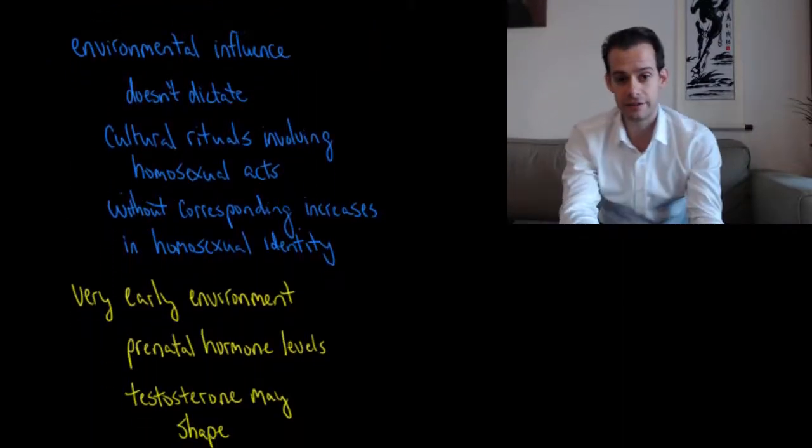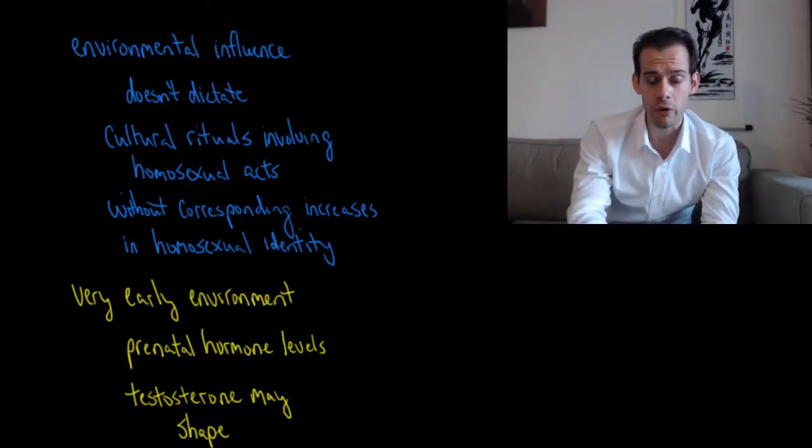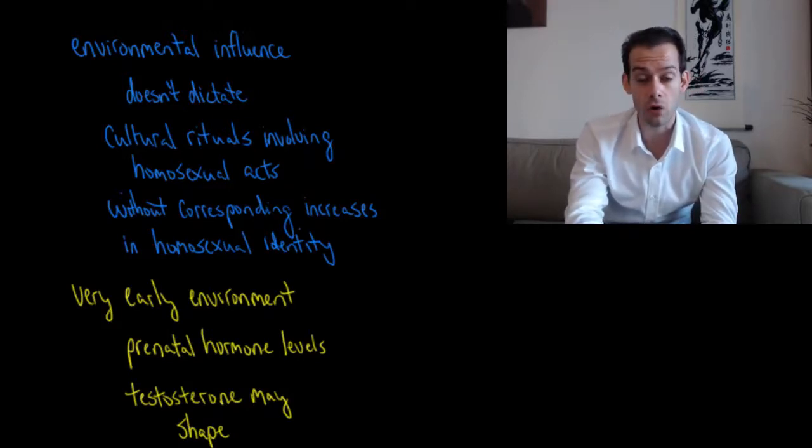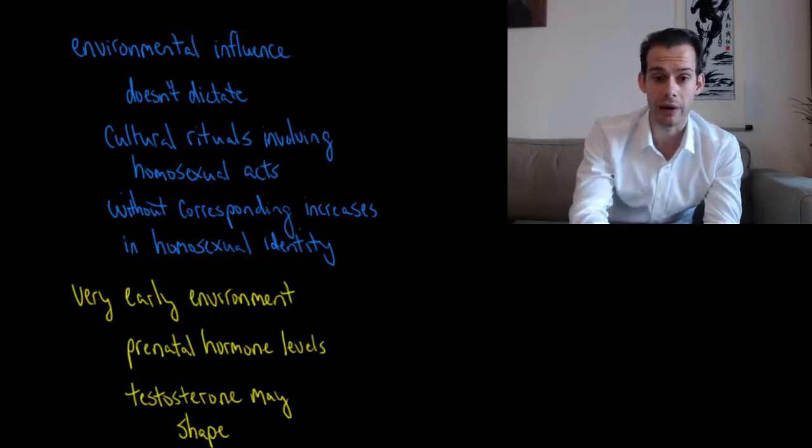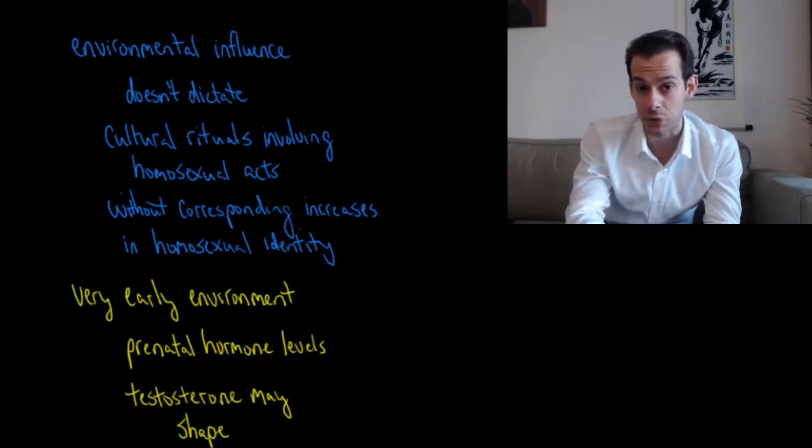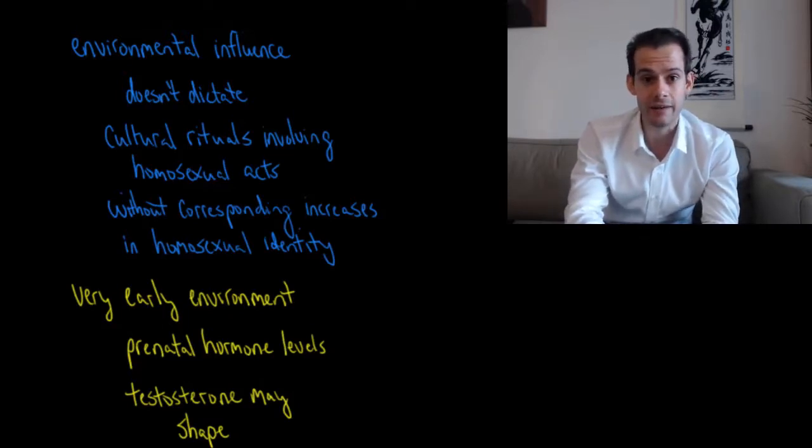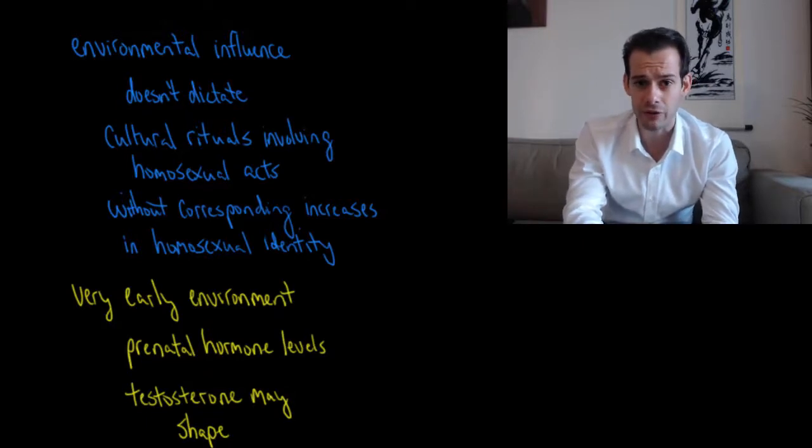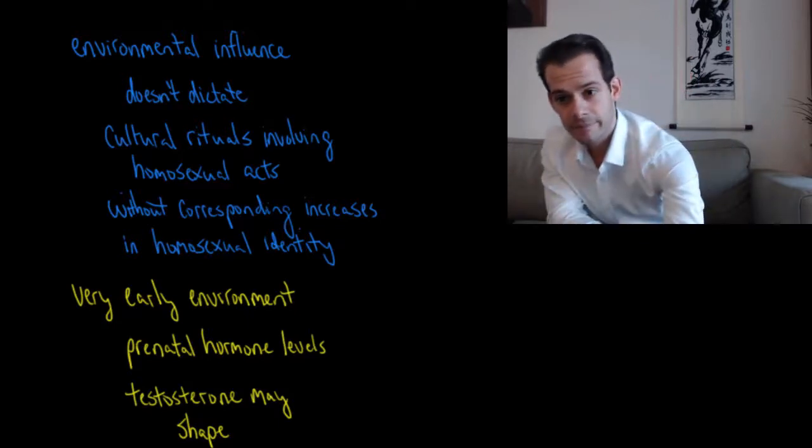Again we have the idea that genes are involved, which means environment isn't dictating sexual orientation. Another way we can see that is that we don't know of specific environmental factors that might cause somebody to be gay. This can be seen in different cultural rituals that involve the performance of what we might consider to be homosexual acts. There are cultures where adolescent boys will perform homosexual acts on older men in the tribe, and what we don't see in these cultures is corresponding increases in these boys identifying as homosexual later. This suggests that these acts are not making them gay. When we think about environmental influence on sexual orientation, it's probably the case that we're talking about very early environment.